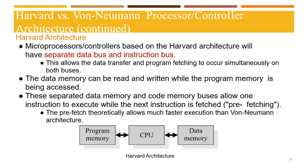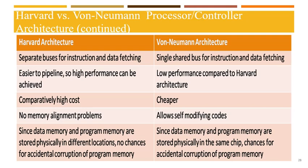Tabulating the differences: Harvard architecture has separate buses for instruction and data fetching while Von Neumann has a single common bus. Harvard architecture is easier to pipeline for high performance while Von Neumann has comparatively lower performance. Harvard architecture has a higher cost while Von Neumann is cheaper. Harvard architecture has no memory alignment problems. In Harvard architecture, since data and program memory are stored physically in different locations, there is no chance of accidental corruption of program memory, whereas in Von Neumann architecture, accidental corruption of program memory may occur if data and program memory are stored in the same chip.